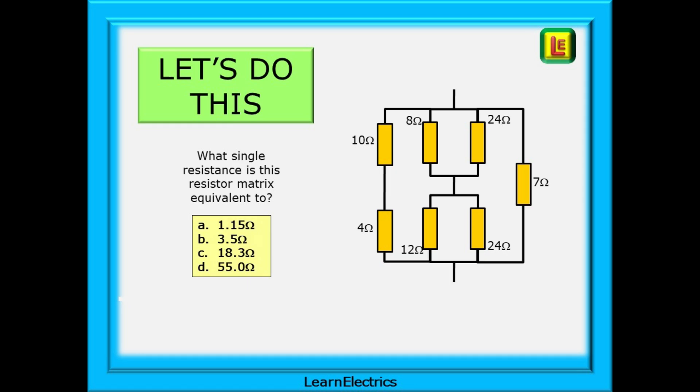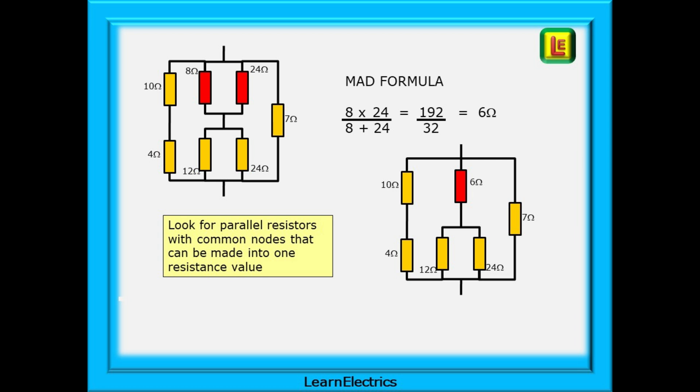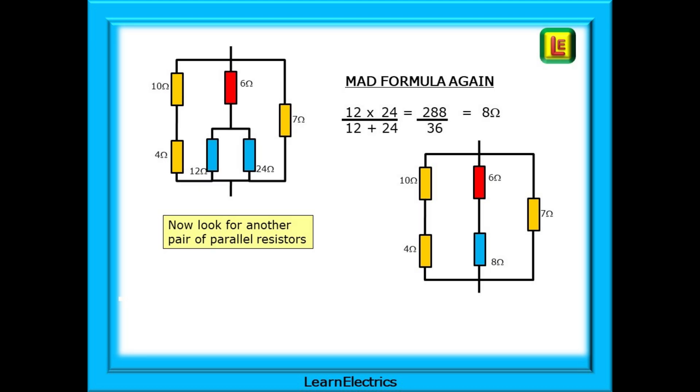Let's do this calculation together. Let's put some numbers in and find an answer. Pause the video at any time for greater understanding and do work through the calculations with us using a calculator and notepad. Look for parallel resistors with common nodes. Begin with the two red resistors in parallel. Using the MAD formula as shown these become one 6 ohm resistor. Now look for another pair, the blue pair. Use the MAD formula again and we have an effective resistance of 8 ohms.